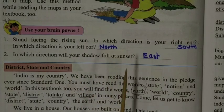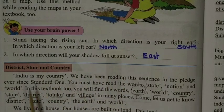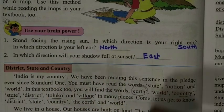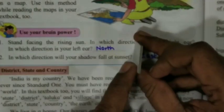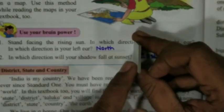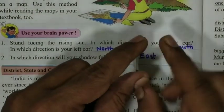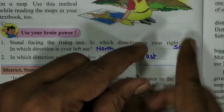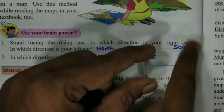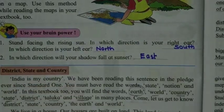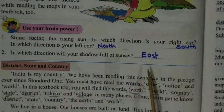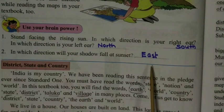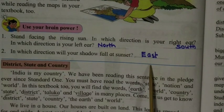In which direction will your shadow fall at sunset? At sunset, the sun will be on this side and you are standing here, so your shadow will fall on the other side. Your shadow will fall in the east direction.